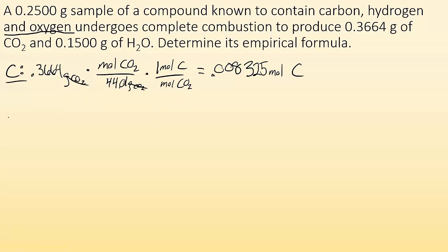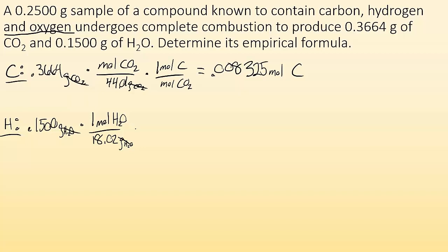Now for hydrogen. We look at the H2O — 0.1500 grams of H2O times one mole over 18.02 grams of H2O, then times two moles of hydrogen per one mole of H2O. The moles of H2O cancel out, and we get 0.01665 moles of hydrogen.